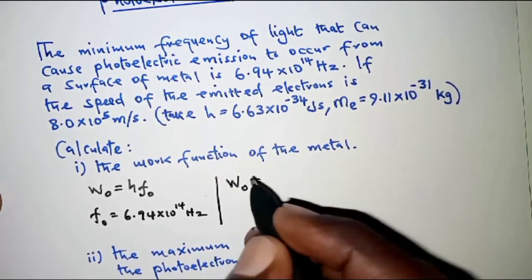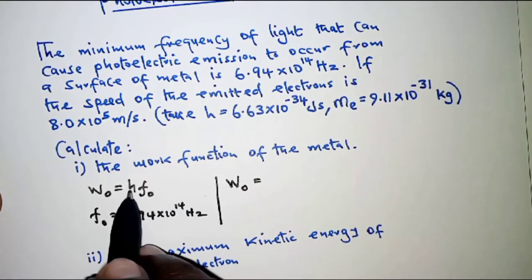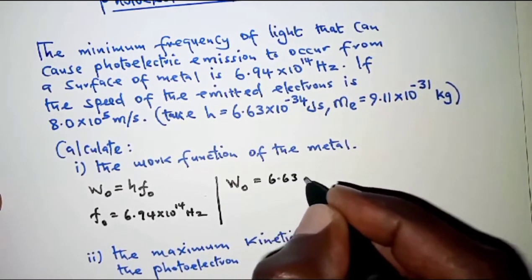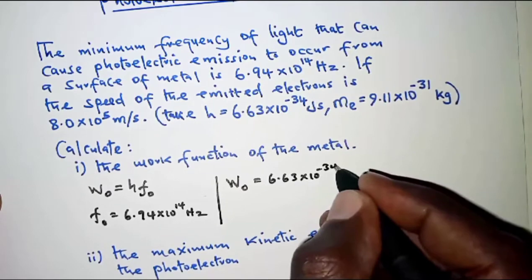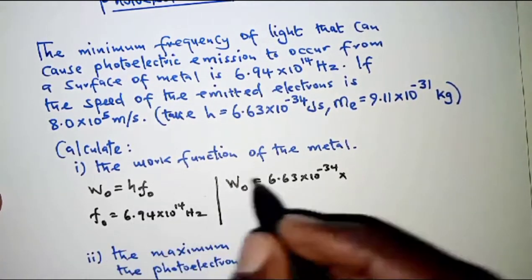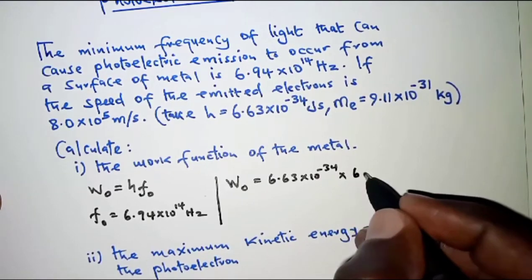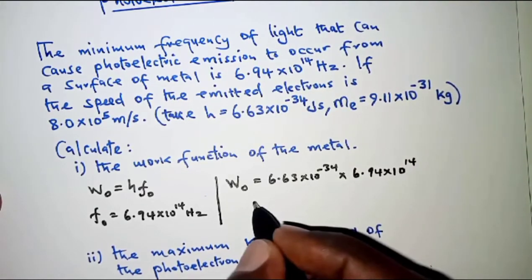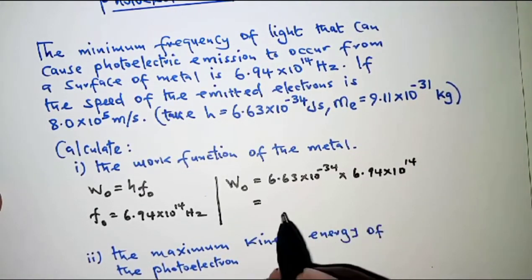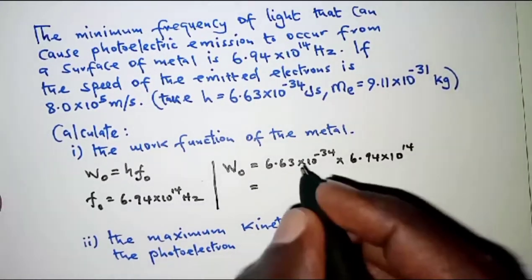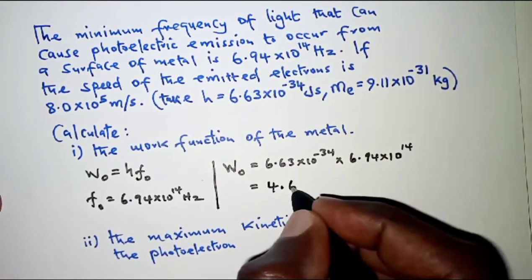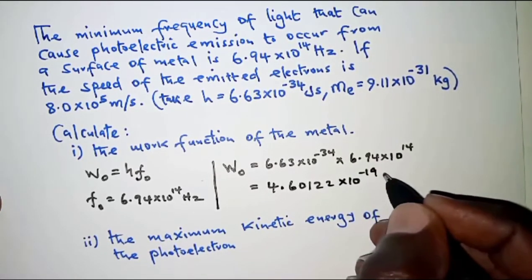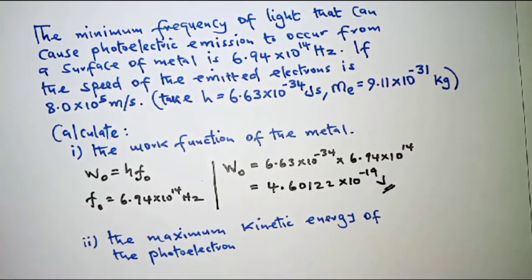Therefore, W₀ is calculated as: W₀ = h × f₀ = 6.63 × 10⁻³⁴ × 6.94 × 10¹⁴ Hz, which gives us 4.60122 × 10⁻¹⁹ joules.